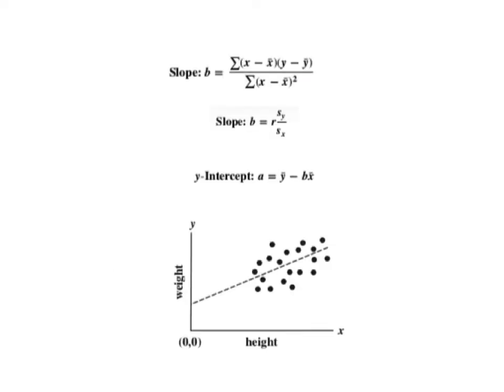At the top of this slide is the formula for the slope b. This may look somewhat reminiscent of the formulas used in correlation. In fact, with a little algebraic manipulation, it can be rewritten in terms of the correlation coefficient r and the standard deviations of x and y. That is the second formula shown. Below that is the formula for the y-intercept.